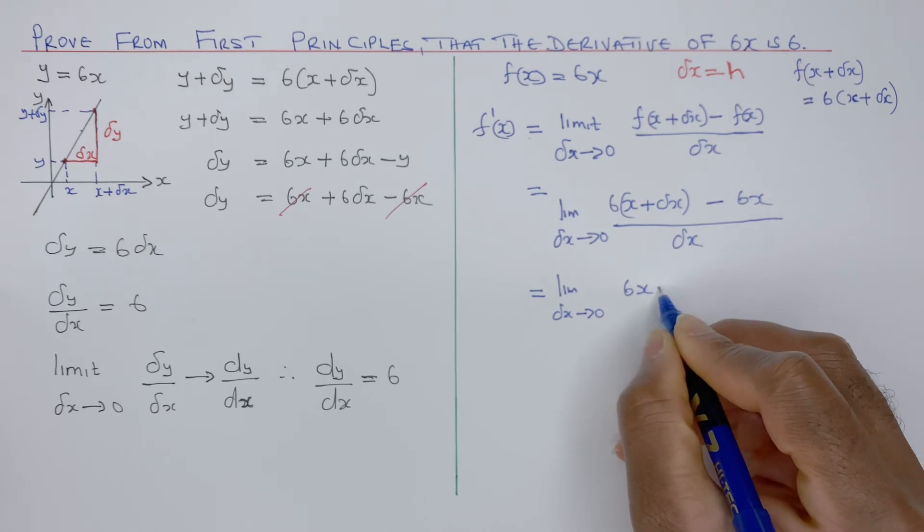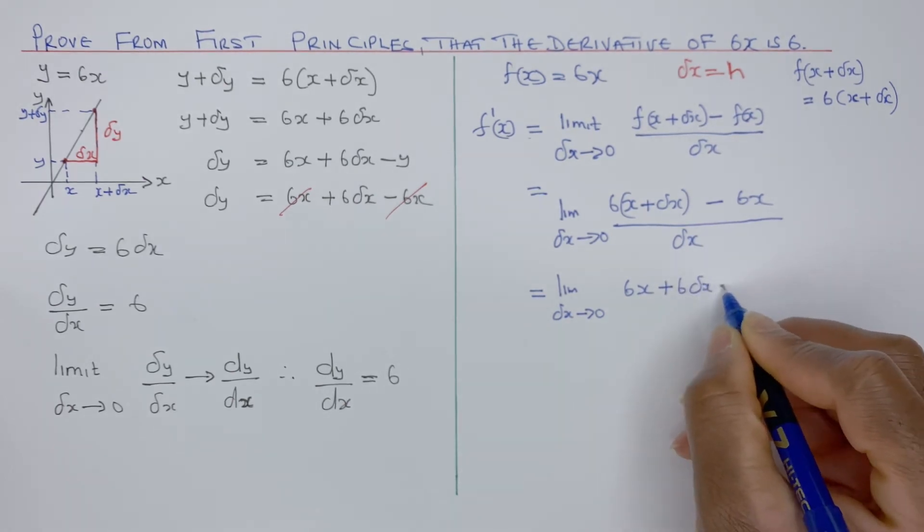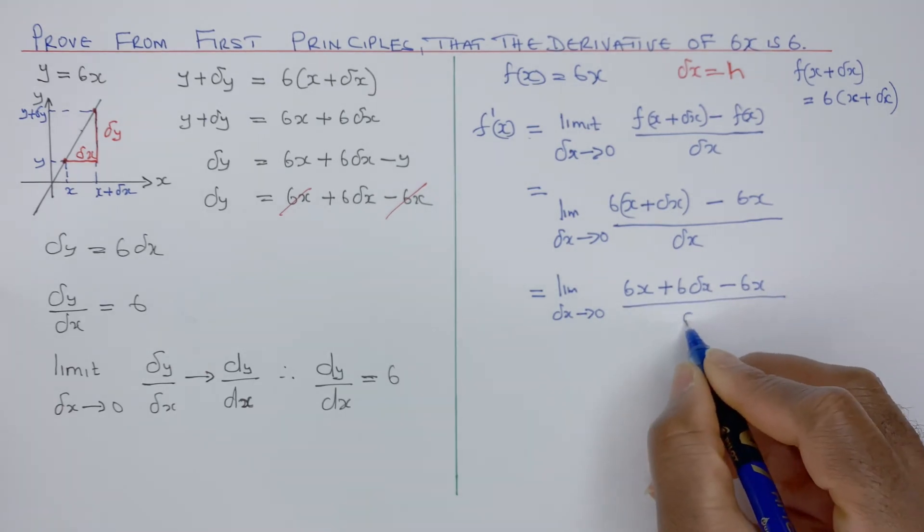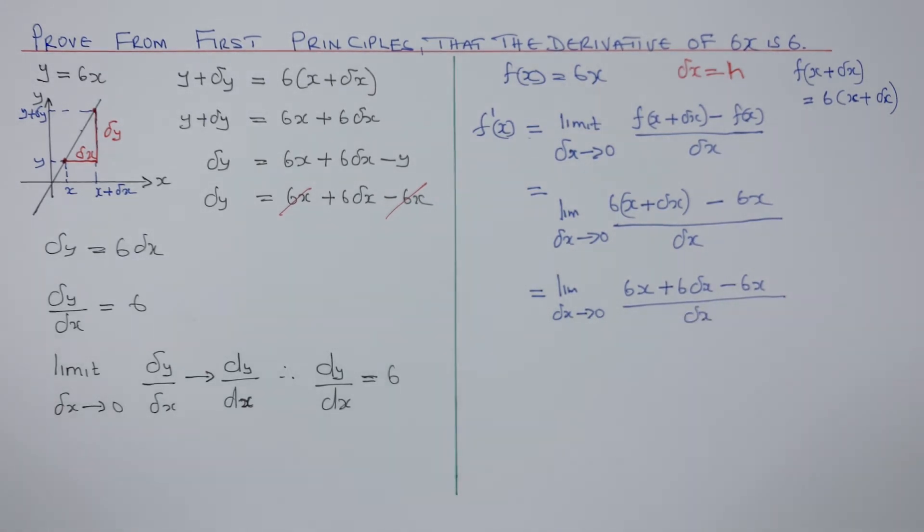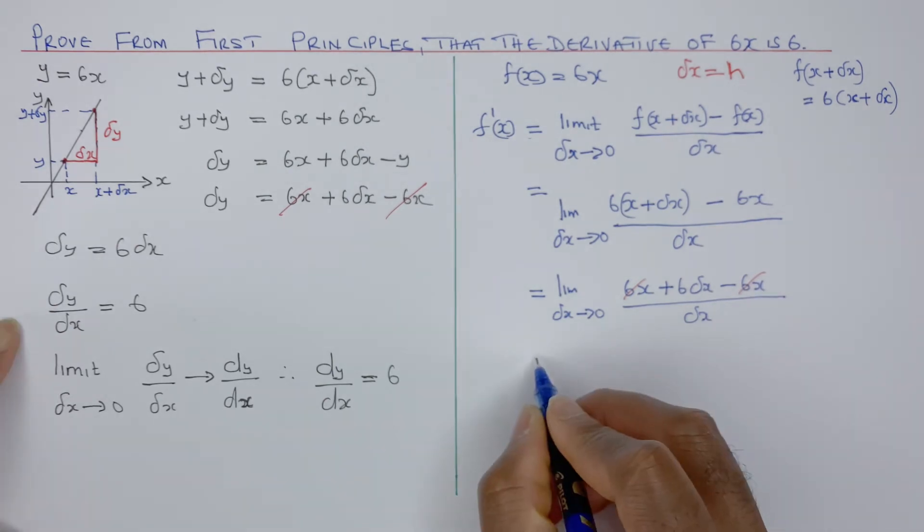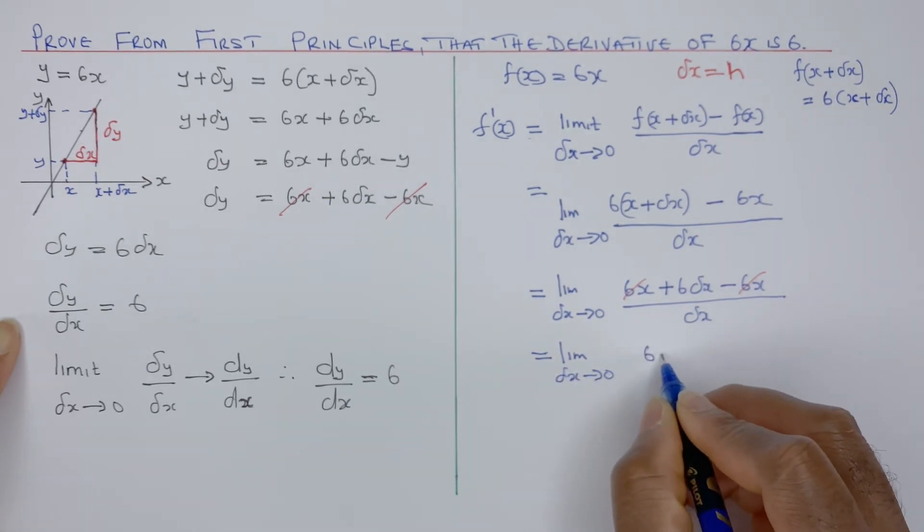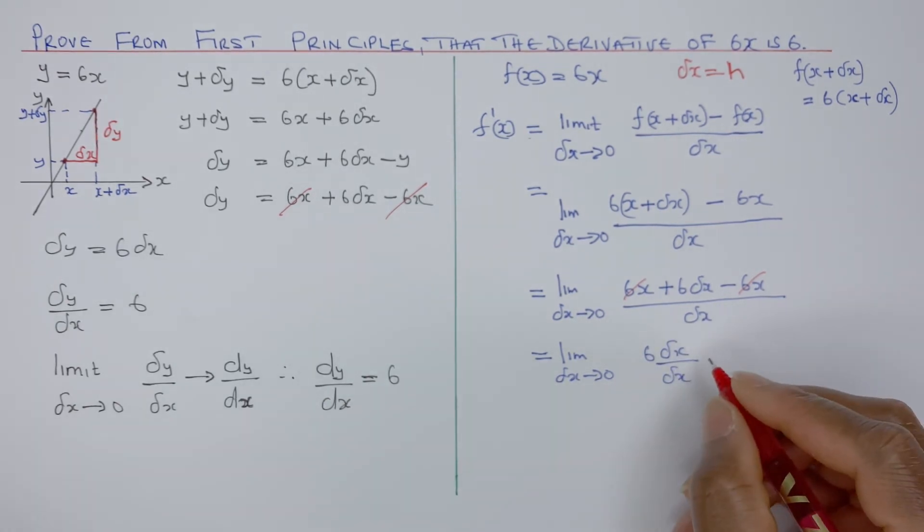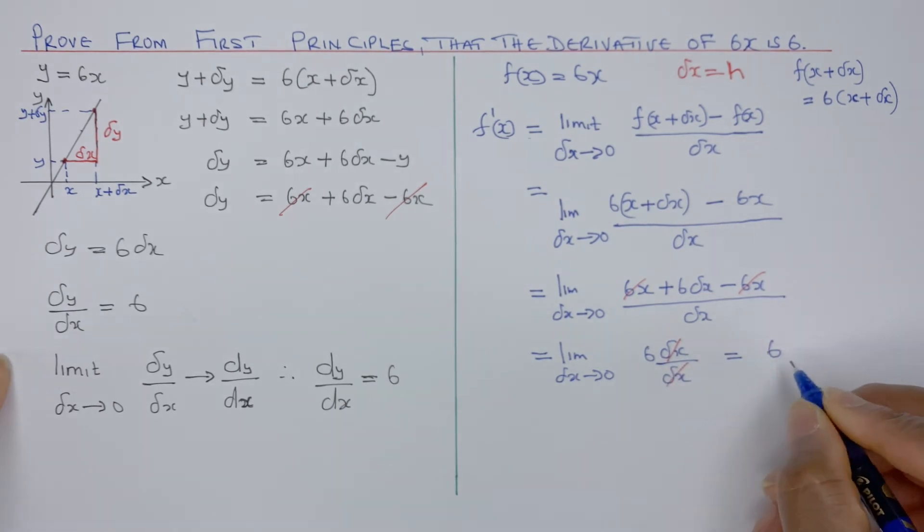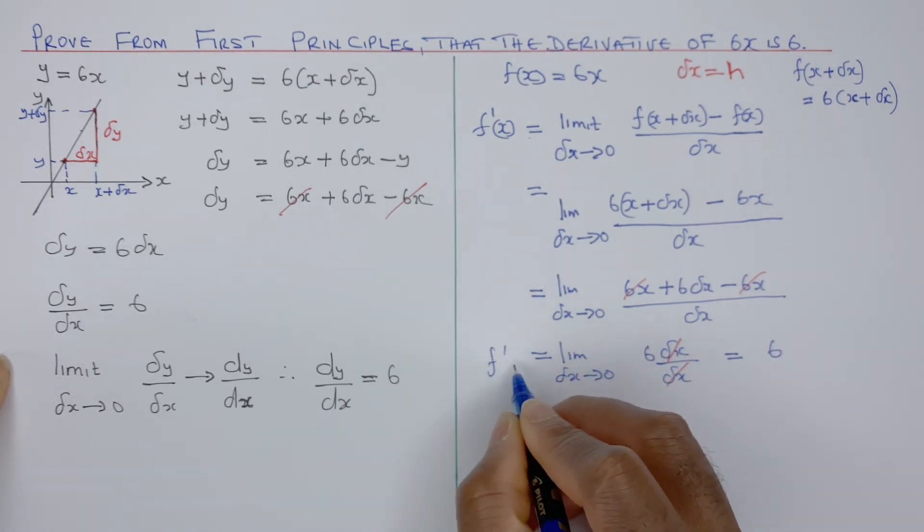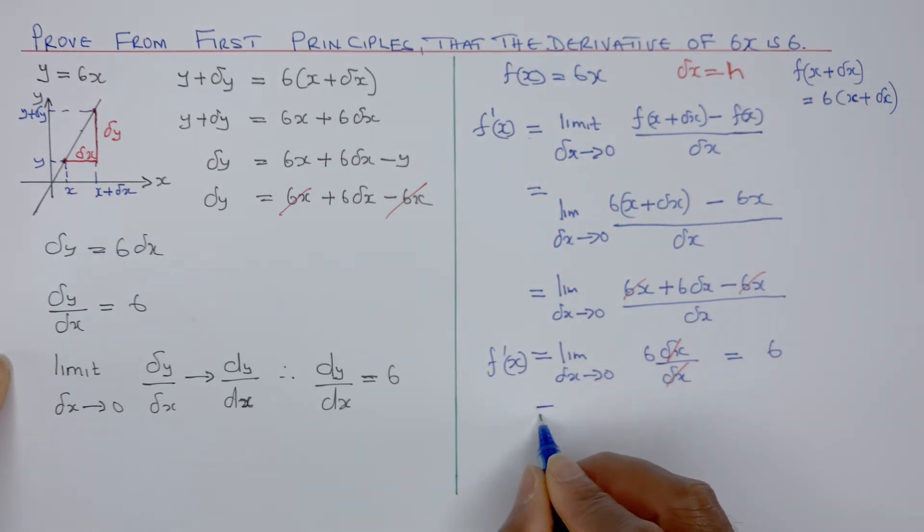So that is 6x plus 6 delta x minus 6x over delta x. Now 6x, we cancel 6x, and then we have limit delta x tends to 0, 6 delta x over delta x, cancel that, that equals 6. So that's still f dash x. And finally, we get f dash x equals 6.